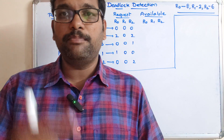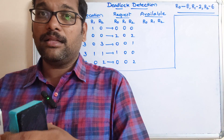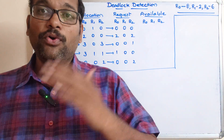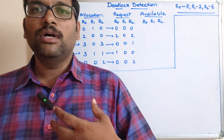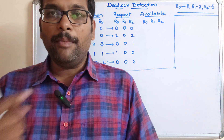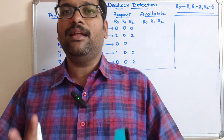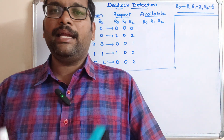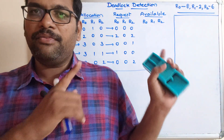We have already seen the banker's algorithm in deadlock avoidance. The only difference between the banker's algorithm in deadlock avoidance and deadlock detection is this: in deadlock avoidance, before allocating resources to a process we apply the banker's algorithm to avoid the deadlock situation. In deadlock detection, the algorithm is applied only once a deadlock has already occurred, to identify where the deadlock is.